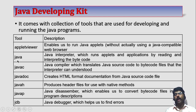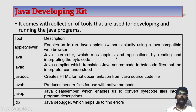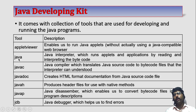The second one is called as Java, which is actually an Interpreter. The job of this Java interpreter is to convert the byte code into machine code. Java Interpreter runs applets or applications by reading and interpreting the byte code — it will convert the byte code into machine-specific code. It is an interpreter.